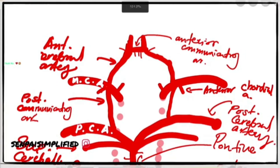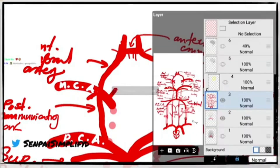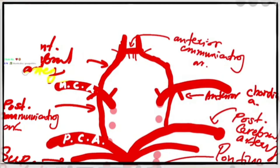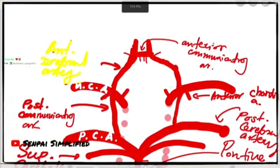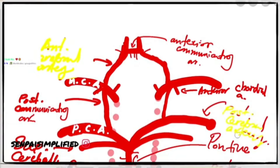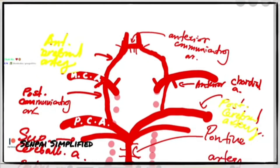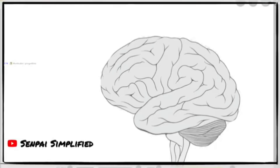Let me give you an overview of which of these main arteries supply which parts of the brain. We have the anterior cerebral artery, the posterior cerebral artery, and the middle cerebral artery. We need to find out which of these supply which parts of the brain. Let's get into it and pull up another diagram.